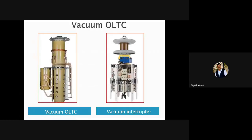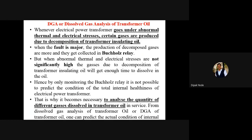So this is all about the condition monitoring of on-load tap changer. You can see the picture of vacuum OLTC, and inside this vacuum OLTC the vacuum interrupters are used. Now we are interested in the next topic. In today's class, for the practical, I told you that we will discuss the concept of dissolved gas analysis of the transformer oil.